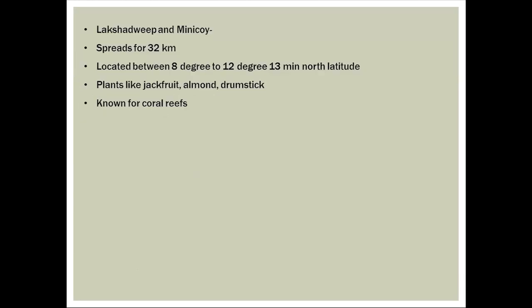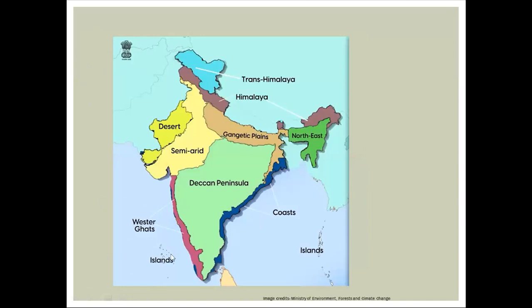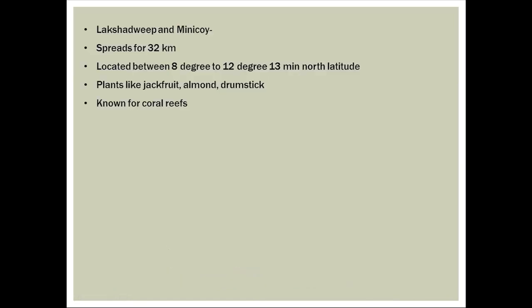The Lakshadweep and Minikoi Islands are found in the Arabian Sea. The latitudinal extent is between 8 degrees to 12 degrees 13 minutes north latitude, and they spread across 32 kilometers. Lakshadweep is well known for its coral reefs, which are very rich in coral populations. Apart from coral, one can find jackfruit, almond, and drumstick growing in this region.